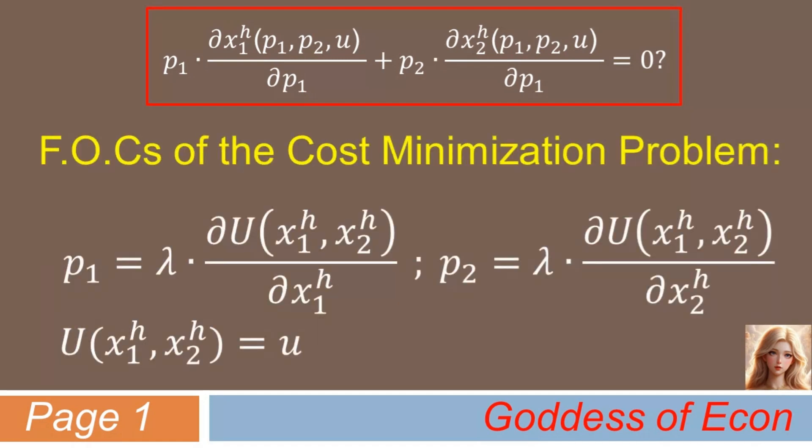The first FOC is that P1 equals λ times ∂u/∂x_1^h. The second FOC is that P2 equals λ times ∂u/∂x_2^h. The last one is just a constraint of the problem. That is, u(x_1^h, x_2^h) equals a small u. Here λ denotes Lagrange multiplier, and x_1^h and x_2^h represent Hicksian demands, as these are the very conditions that should hold at the interior optimum.